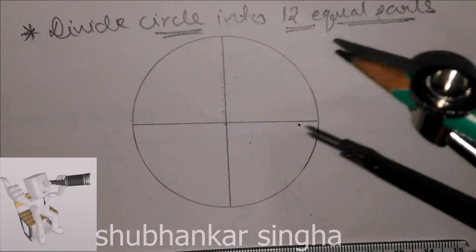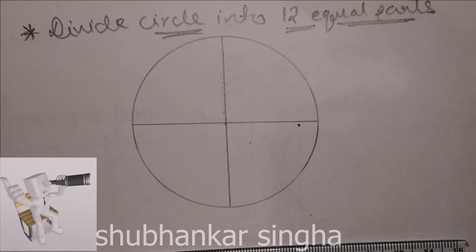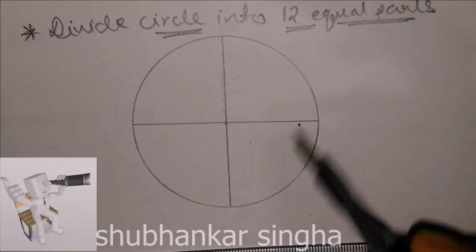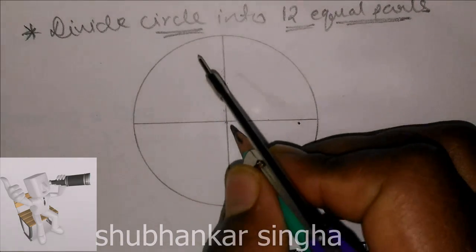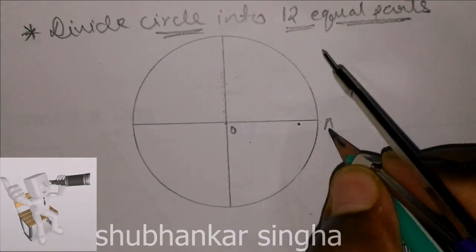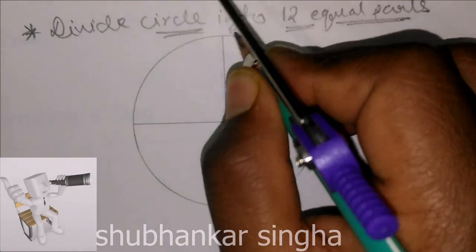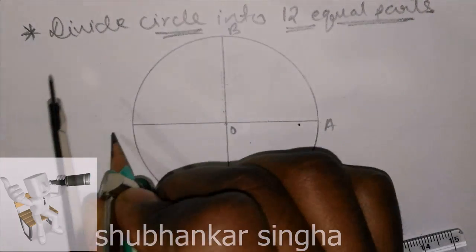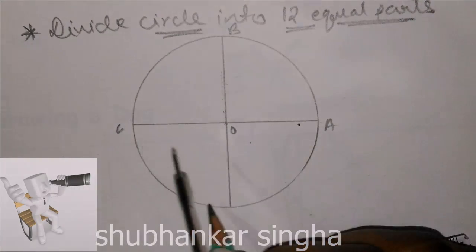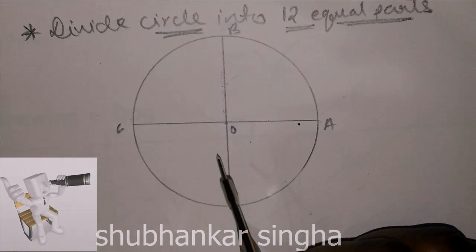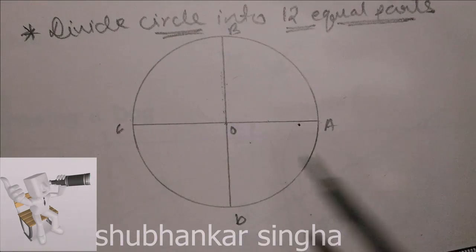Now we take this point as O, this as A, this as B, this as C, and this as D.